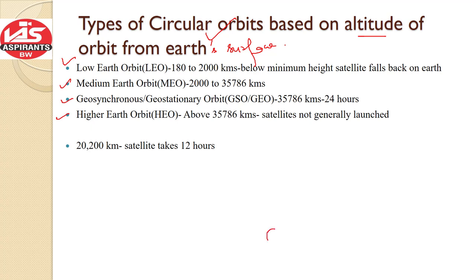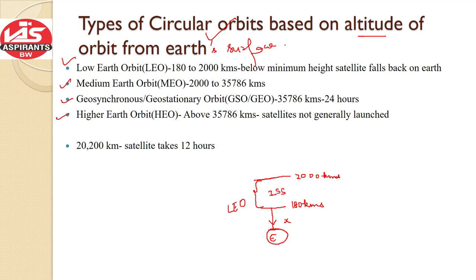Let us understand this with a figure. This is the Earth and its surface. From the surface up to 180 kilometers, we generally do not launch any satellite, because the centrifugal force cannot balance the gravitational force at that height — the gravitational force is too strong and the satellite would fall back. So 180 kilometers is the minimum distance. Starting from 180 kilometers up to 2,000 kilometers is the low Earth orbit. The International Space Station and human space missions are generally launched in low Earth orbit because it is nearer to Earth.